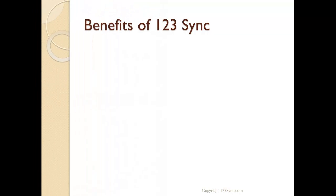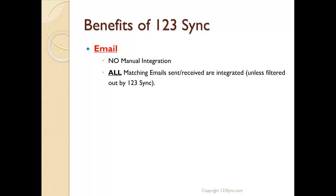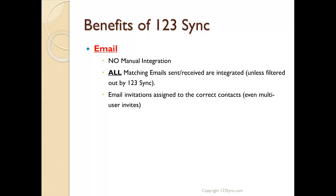Let's look at the great benefits of using 123Sync with ACT — first, email. There's no manual integration; all email gets automatically integrated for the mailboxes you set up. All matching emails sent and received are integrated, whether sent from Outlook, mobile phones, or whatever. You can add filters in 123Sync to exclude certain emails. Email invitations are always assigned to the correct contacts if the contact exists in ACT, and even multi-user invitations get assigned correctly. The client-side Outlook is now free without a slow add-in.